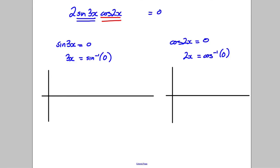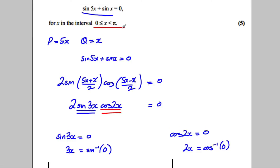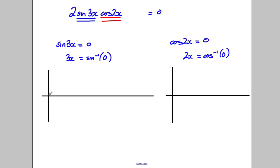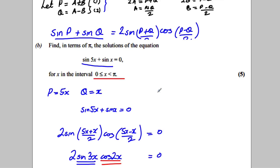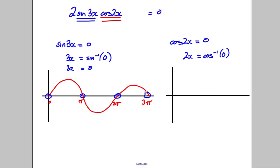Because I've got 3X, I'm going to triple the interval, looking between 0 and 3pi. The sine graph goes up to pi, down to 2pi, and up to 3pi. Since 3X equals inverse sine of zero, 3X can be 0, pi, or 2pi — but not 3pi as we need values less than 3pi. So X equals 0, pi/3, or 2pi/3.